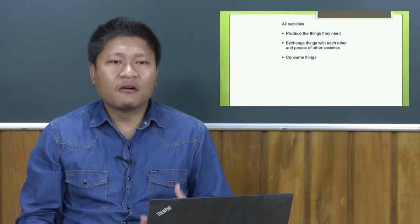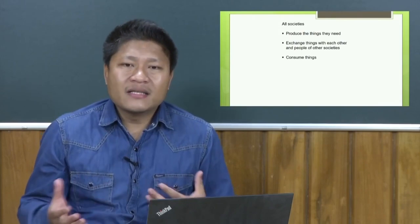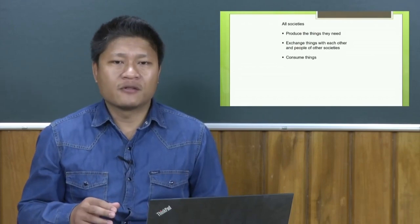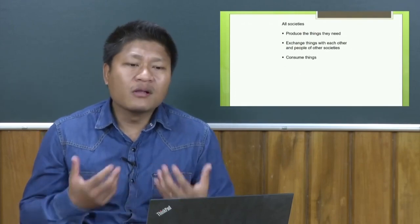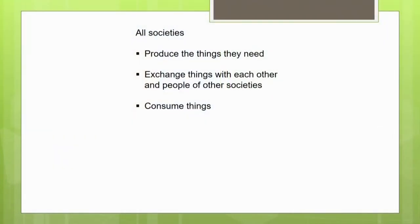Now, as I had talked about, to understand or make sense of the economic systems in different societies - why is it important to link the economic systems with different forms of societies? For example, all societies produce the things they need. It can be their basic needs for subsistence, for their sustenance, or it can be something beyond that.